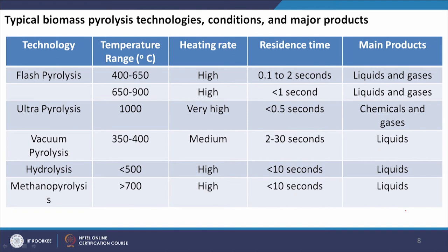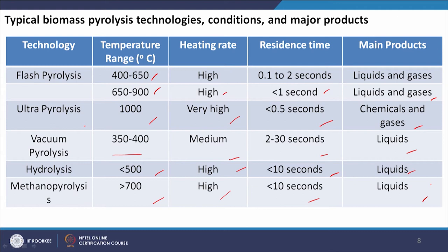Flash pyrolysis has a high heating rate with less residence time, producing liquid and gases. Ultra pyrolysis operates at 1000°C with a very high heating rate and short residence time, yielding chemicals and gases. Vacuum pyrolysis at 350–400°C with medium heating rate and low residence time preferably produces liquids. Hydropyrolysis at less than 500°C with high heating rate under 10 seconds also gives liquid, as does methanopyrolysis at greater than 700°C. These different types of pyrolysis vary in product distribution, heating rate, temperature, and residence time.